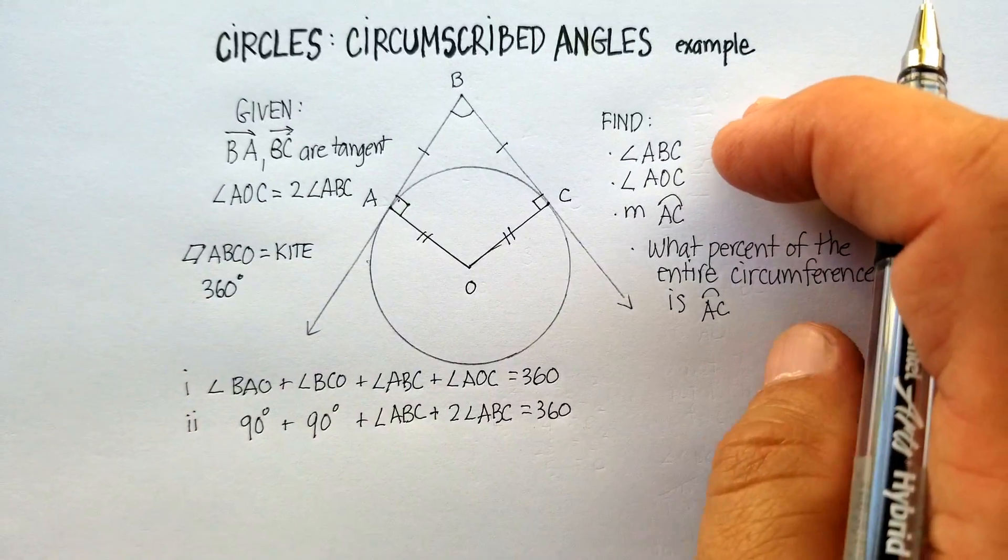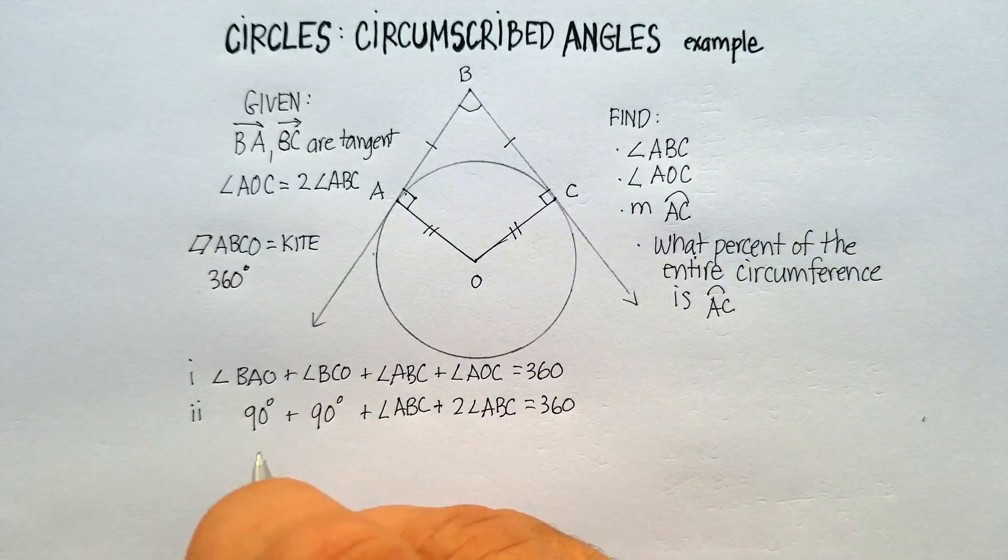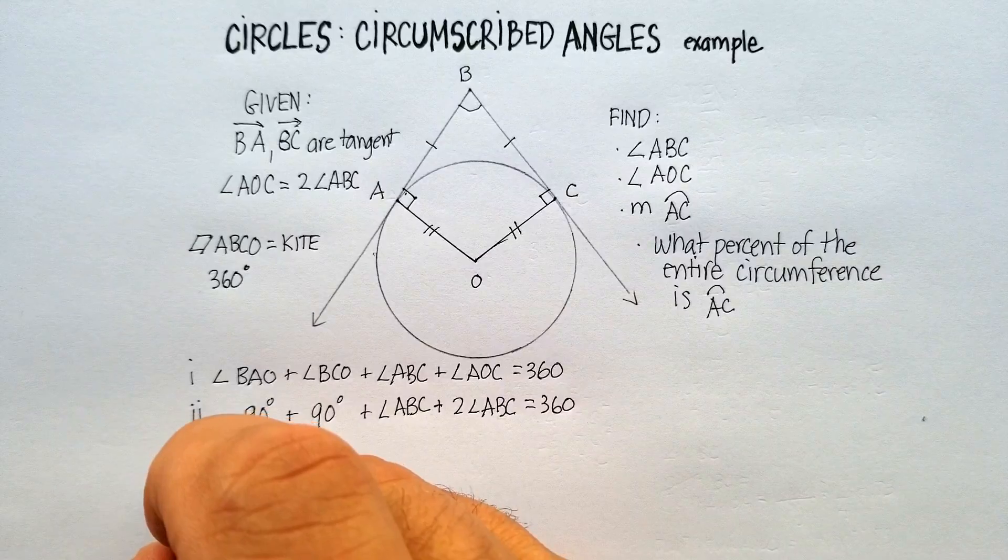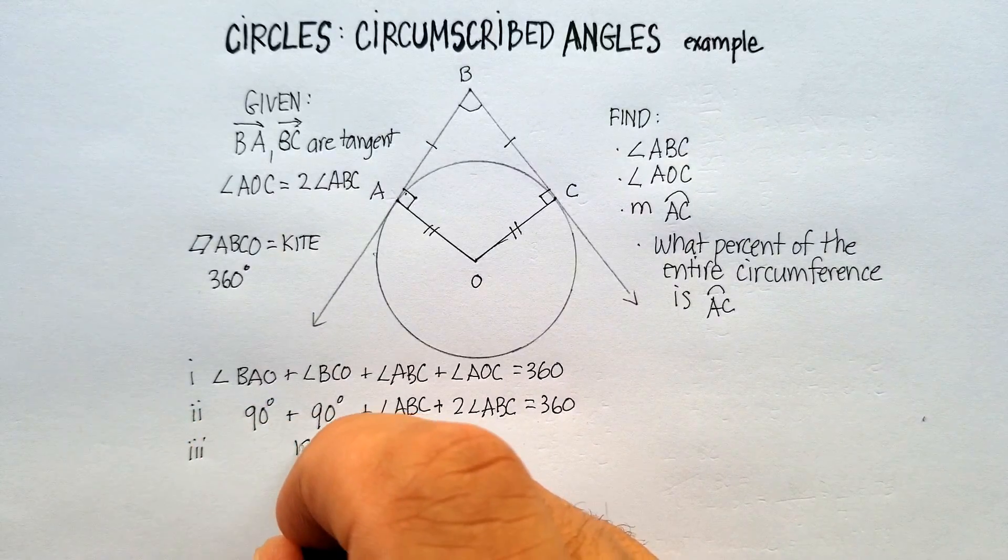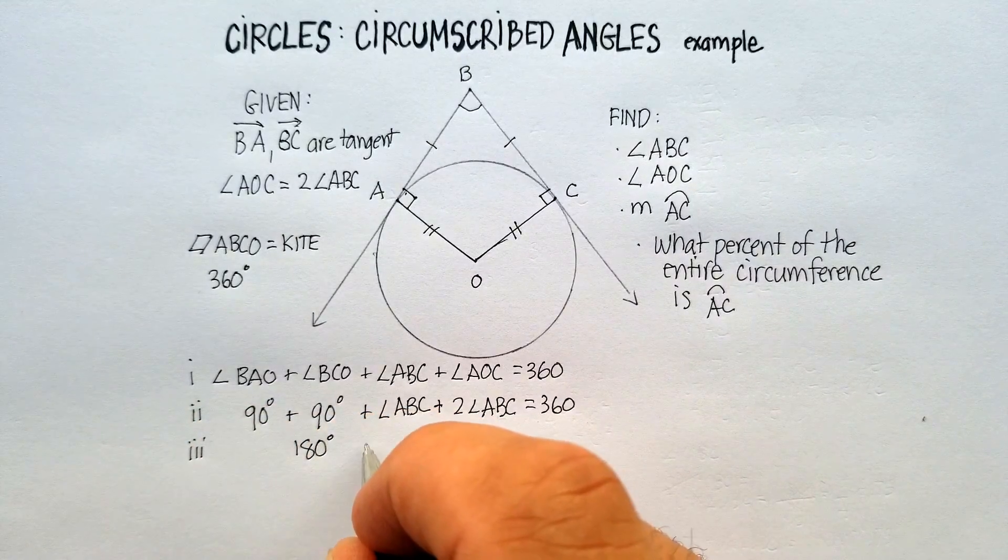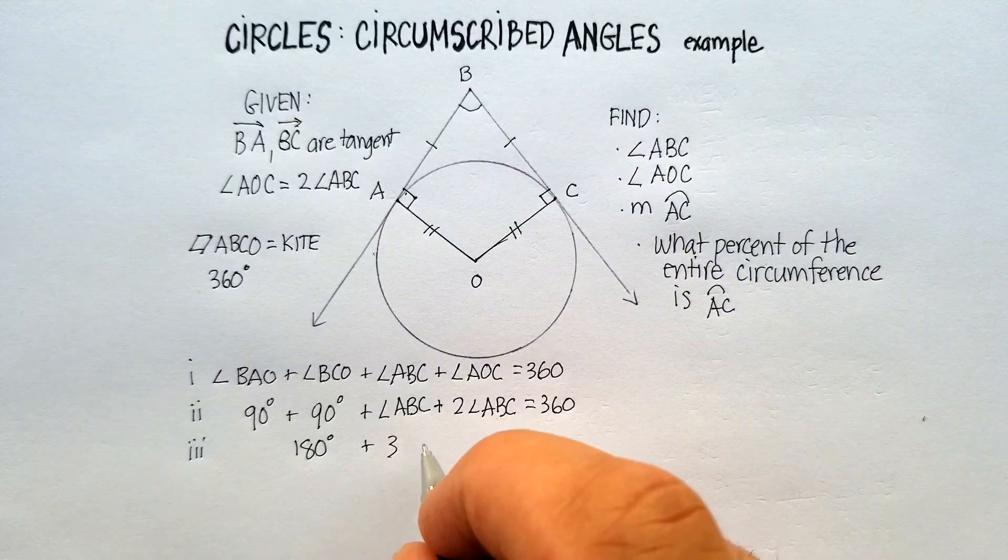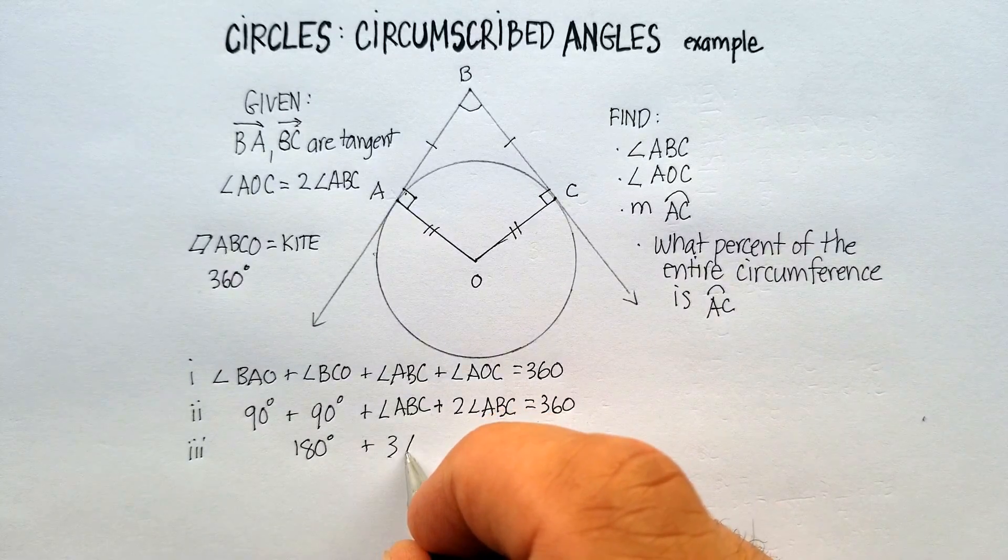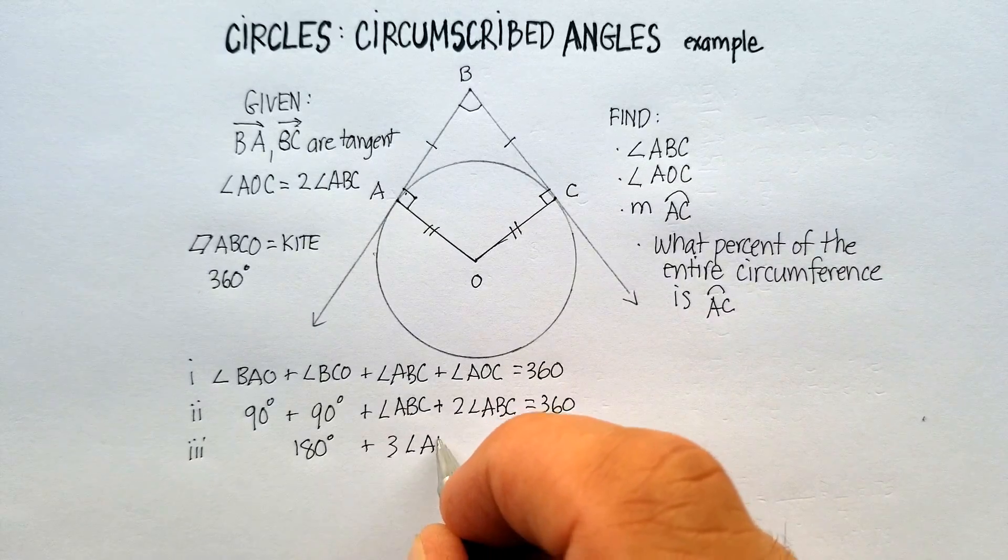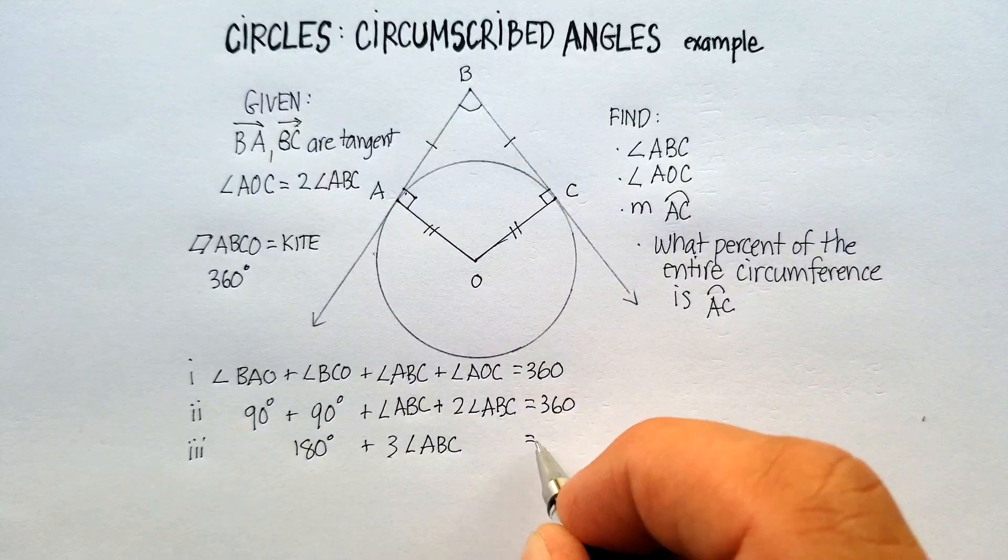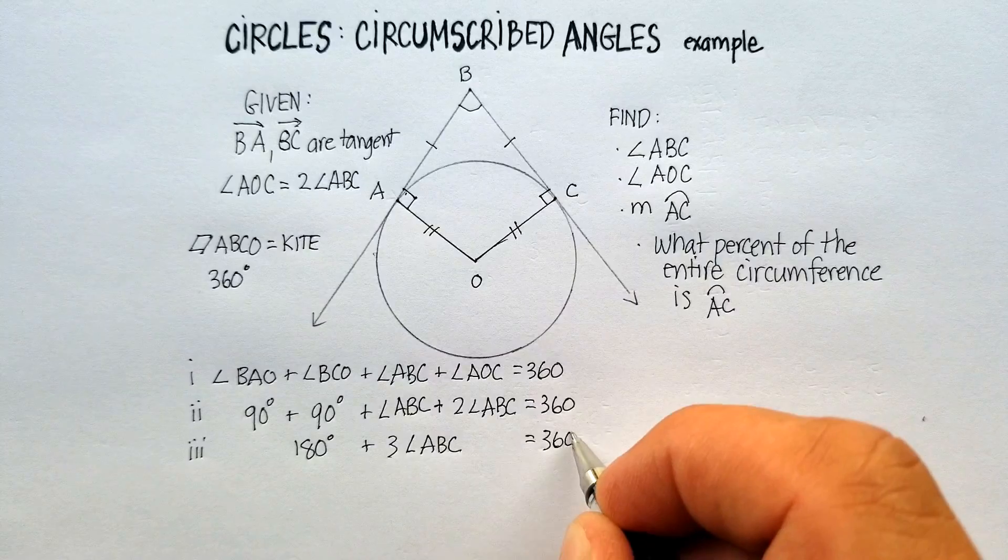Now, let's keep on gathering our like terms. We know that 180 and 180, or 90 and 90 rather, is 180. We know that we have basically three angle ABCs. And then we know that it equals 360 degrees.